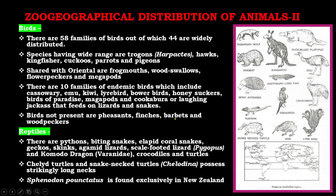Megapods and kookaburra, or the laughing jackass, which feeds on lizards and snakes, are also endemic. Birds not present in this region include pheasants, finches, barbets, and woodpeckers. These are the faunal characteristics of the Australian region.